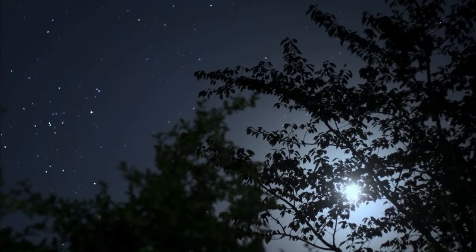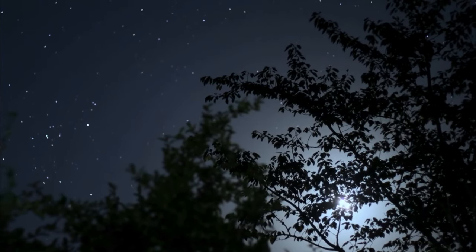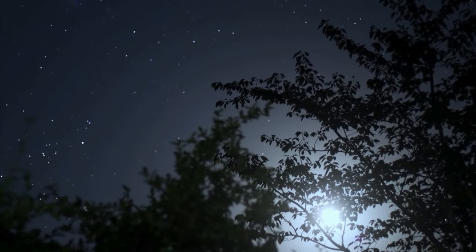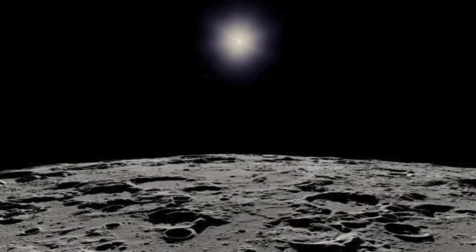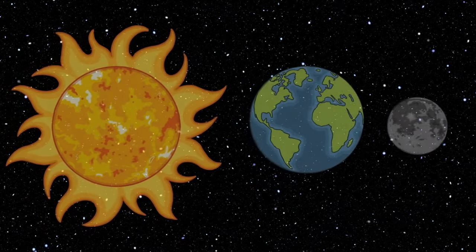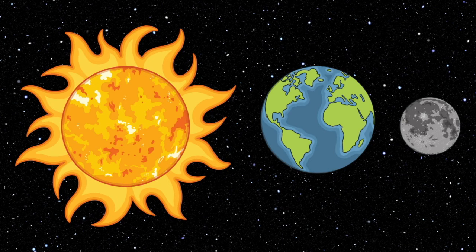What we see of the Moon, or its phases, is caused by the amount of the Moon lit by the Sun. No light actually comes from the Moon. That light is a reflection of sunlight shown to us by the surface of the Moon, and what we see depends on the positions of the Earth, Moon, and Sun.